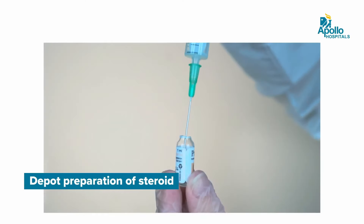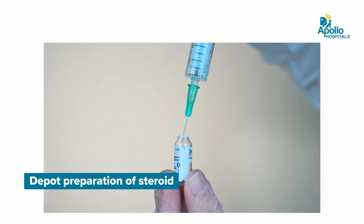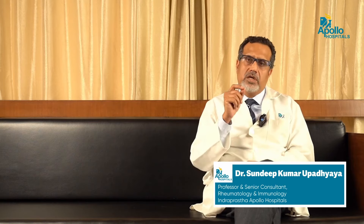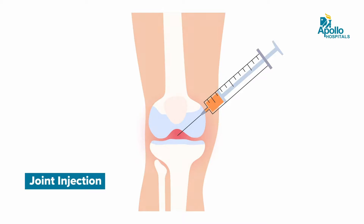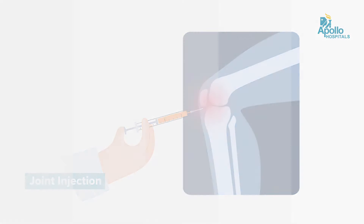Rarely, you might need an intramuscular depot preparation of a steroid so that the pain is controlled faster. There are also times when the patient may need to be injected inside the joint — you might need to aspirate or draw fluid from a swollen knee or a first toe joint and then put steroid into that joint.